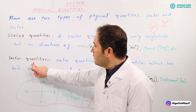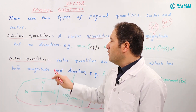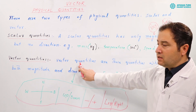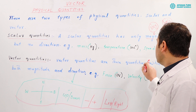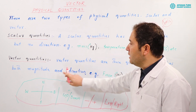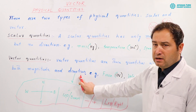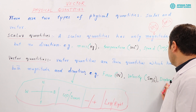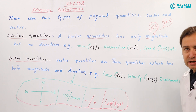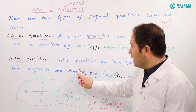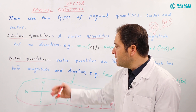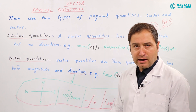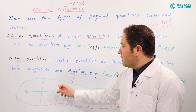The second type is called vector quantity. Vector quantities are those quantities in physics which have both magnitude and direction. Examples include force, velocity, displacement, etc. We already discussed magnitude, so the new word here is direction.